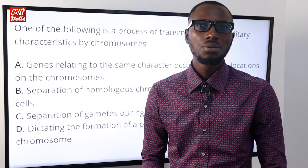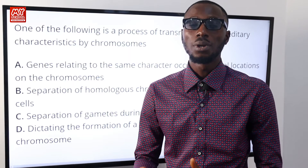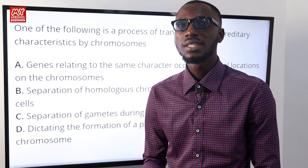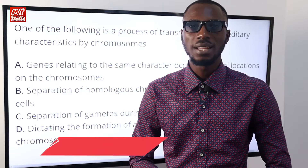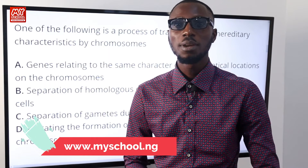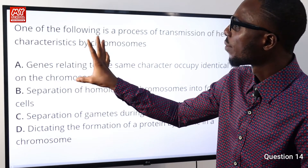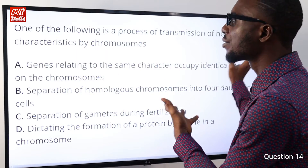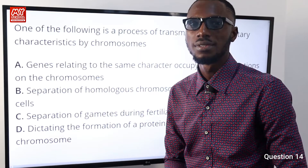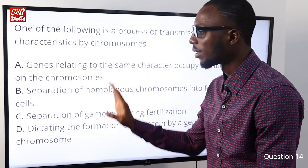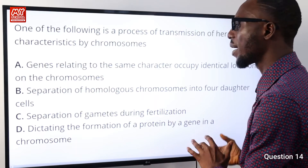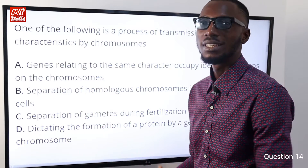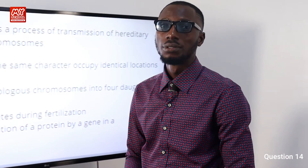Don't forget that the My School tools are available for your use — you can get the My School mobile app or purchase the My School software using the link in the description below. Question number fourteen: one of the following is a process of transmission of hereditary characteristics by chromosomes. Going through the options, option D states dictating the formation of a protein by a gene in a chromosome. So option D is correct.